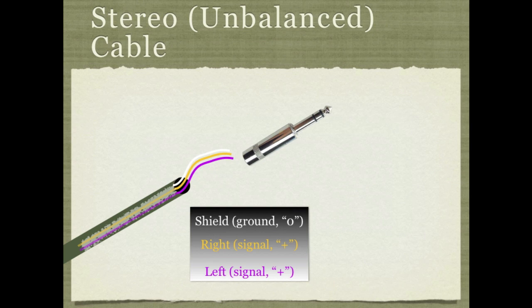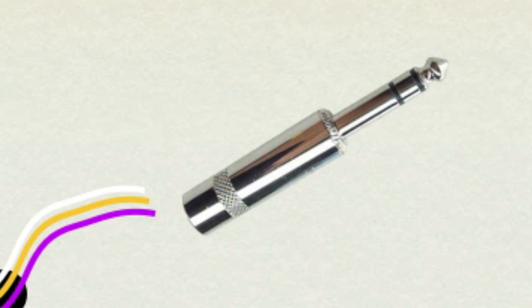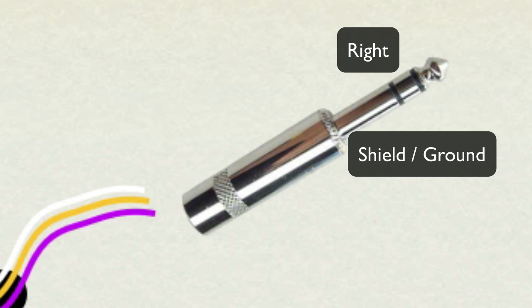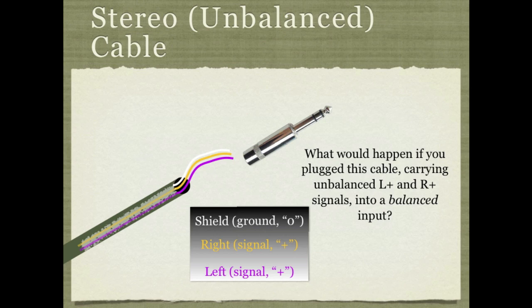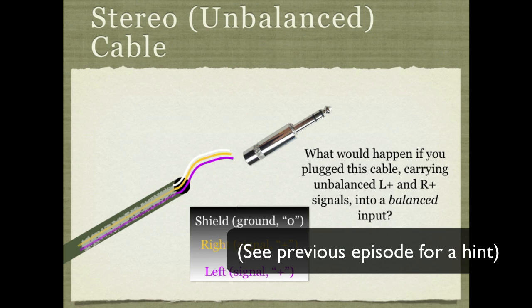Another thing you can do with TRS cables is send two independent signals on them — in this case, a stereo signal. This is similar to what you'd have with an eighth-inch or 3.5 millimeter connector found on consumer headphones or MP3 players. With this stereo use of a TRS cable, the shield goes on the sleeve, the right side of the stereo signal on the ring, and the left side on the tip. Here's an interesting question: what would happen if you ran a stereo left-right signal through this cable into a balanced input? If you know the answer, leave it in the comments.